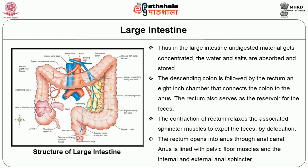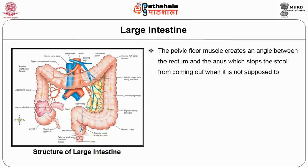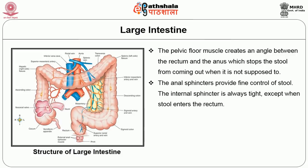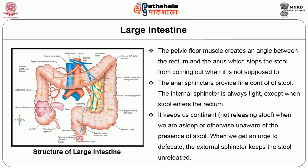The contraction of the rectum relaxes the associated sphincter muscles to expel feces by defecation. The rectum opens into the anus through the anal canal. The anus is lined with pelvic floor muscles and the internal and external anal sphincters. The pelvic floor muscles create an angle between the rectum and the anus, which stops stool from coming out when it is not supposed to. The anal sphincter provides fine control of stool; the internal sphincter is always tight except when stool enters the rectum, keeping continence during sleep. When we get an urge to defecate, the external sphincter keeps the stool controlled.